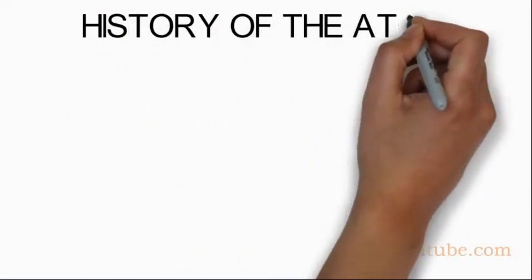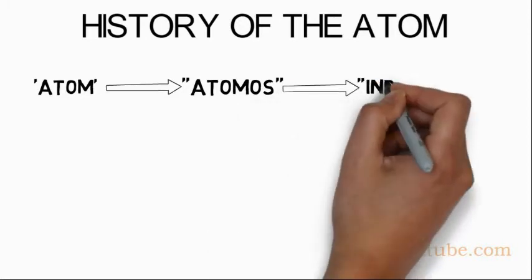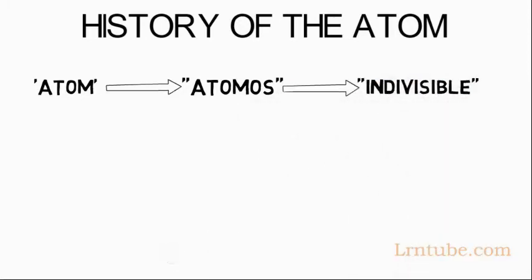We're going to discuss the history of the atom. The word atom comes from the Greek word 'atomos' which means indivisible - that means it cannot be divided or split. This agrees with Dalton's idea. Dalton defined atoms as small indivisible particles.